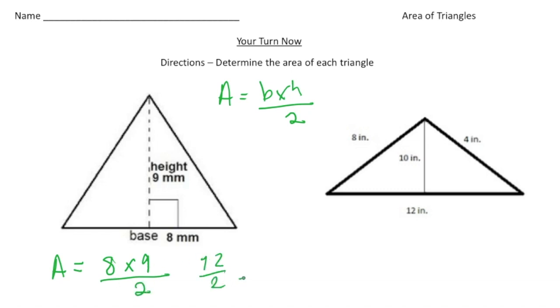So 8 times 9 is 72, and 72 divided by 2 will give us 36. And the correct label is going to be millimeters squared. And there's the first one.